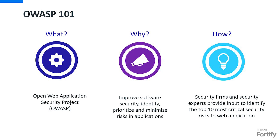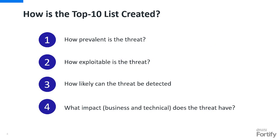When we talk about minimizing risk for applications, how does the Top 10 actually get determined? OWASP has a number of application security firms and industry experts that provide input, and they look at four different things: how prevalent is the threat and how often are we seeing it in applications today; how exploitable is it; how likely can it be detected; and what is the impact — both on the business side and the technical side.